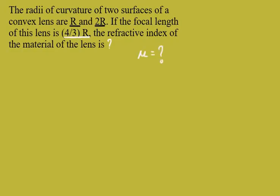Let us mark this view. The radii of curvature of two surfaces of a convex lens is given in this question. So let us say first surface R1 which is equal to plus R and the other surface.